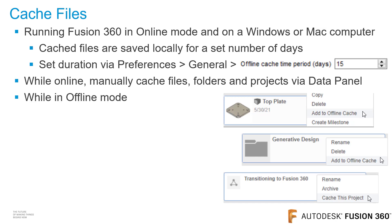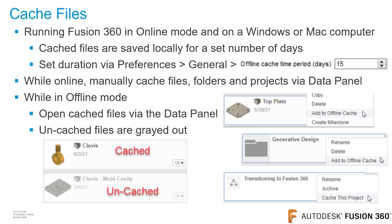While in offline mode, you can open cached files via the data panel as you normally would. Note that uncached files are grayed out and cannot be opened.